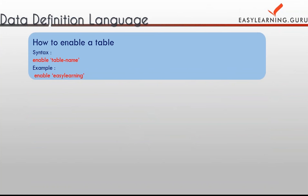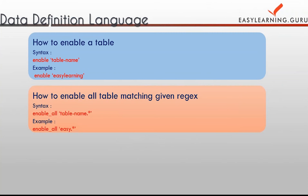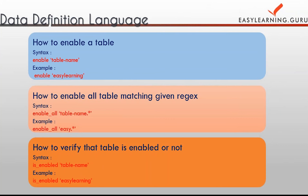Next, to enable a table, use the command 'enable' followed by the table name — for example, 'enable easy_learning'. Similarly, 'enable_all' followed by a regex like 'easy.*' will enable all matching tables in the HBase shell. To verify whether a table is enabled, use 'is_enabled' followed by the table name — it returns true if enabled, false if not.